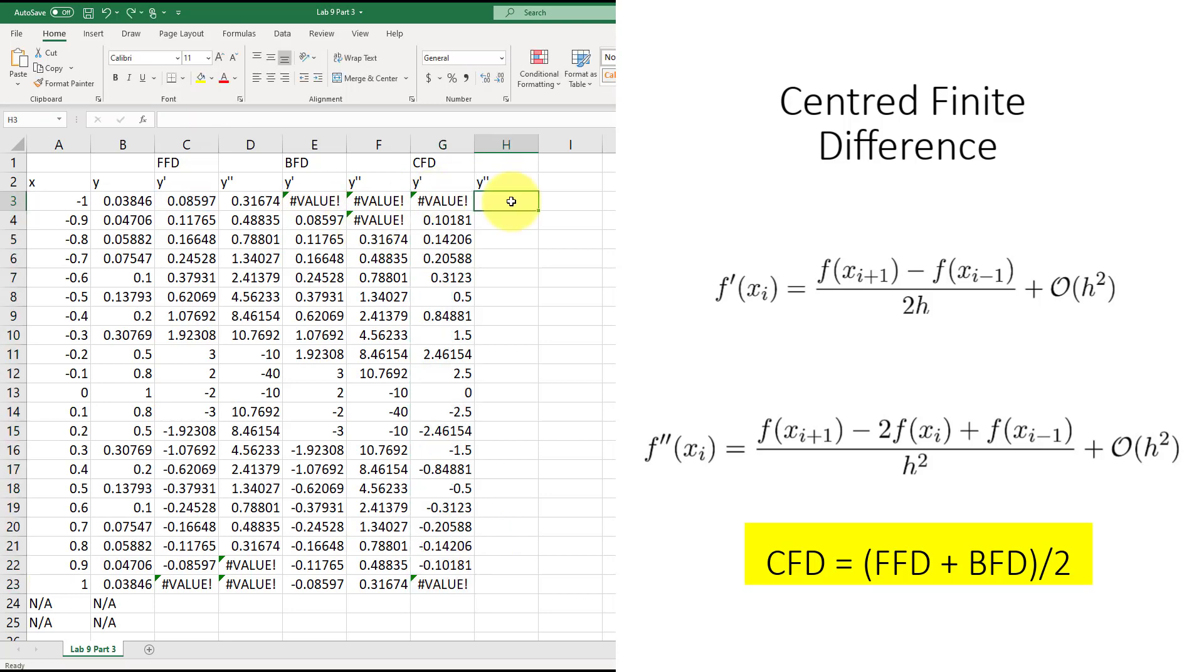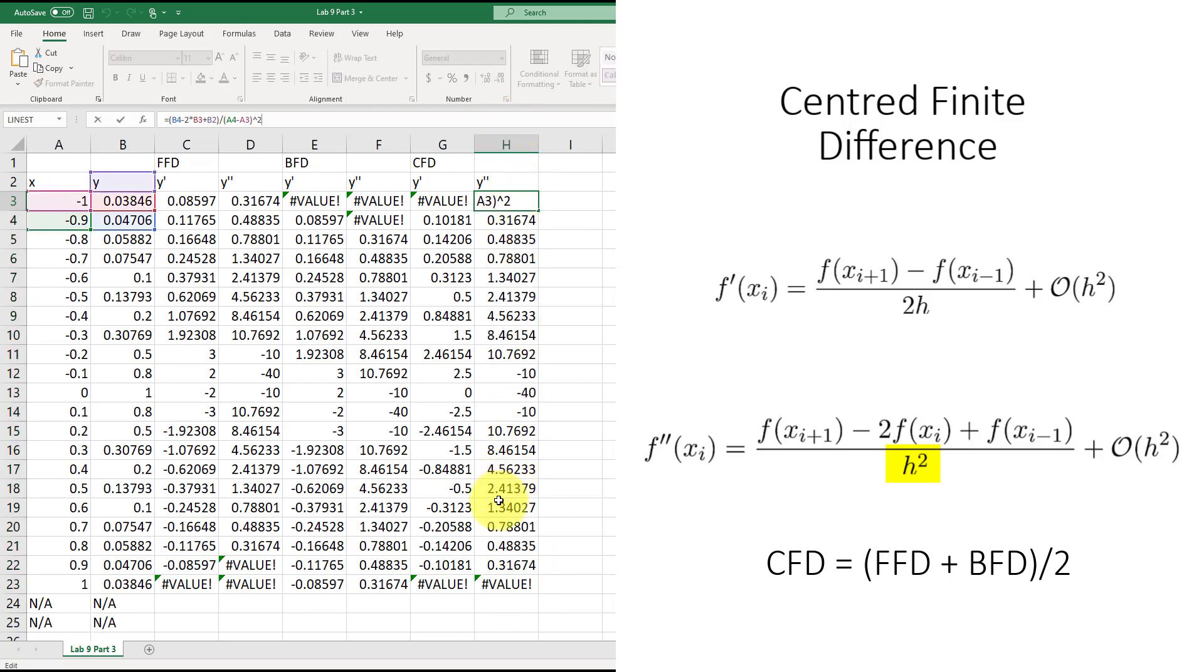Now for the second derivative, which is equal to f(x_i+1) minus 2 times f(x_i) plus f(x_i-1) divided by h squared, which will be A4 minus A3, and then squared. Once again, extend that. And here you can see the first derivative does not exist, and the last derivative also does not exist.